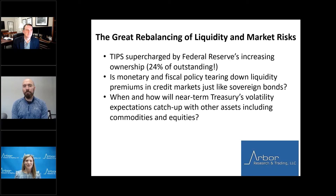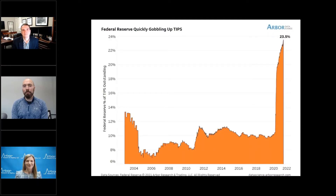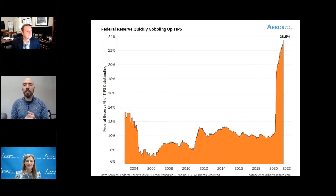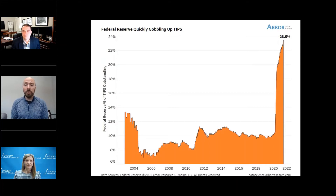Ben, we're going to get started with you. TIPS have been supercharged, primarily by the Fed's increasing ownership — they're up to 24%. Both Jim and I have been harping on this a lot lately: the liquidity component behind a lot of markets. The Fed and fiscal stimulus has had a big impact on dampening volatility expectations and really these liquidity premiums across nearly every market. One place you can see that very clearly is in the TIPS space.